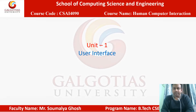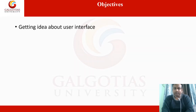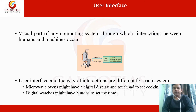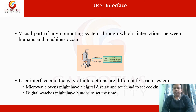Good morning everybody. In this class we will discuss about user interface. After this class you will get an idea about what is user interface, what are the different types of interface, and what is the concern of user interface. The visual part of any computing system through which interaction between human and machine occurs is called user interface. People interact with the computing system through the user interface, and machines also display their results through the user interface.